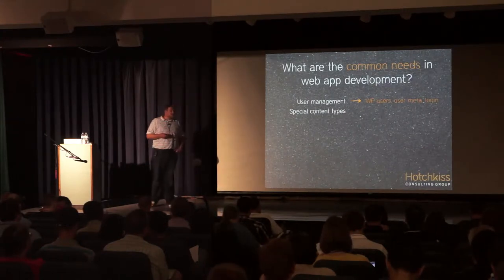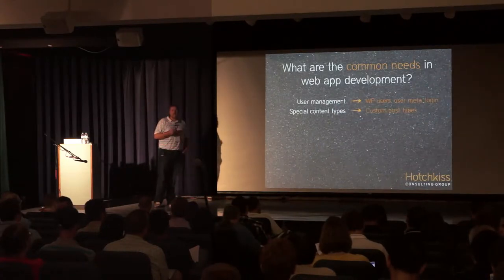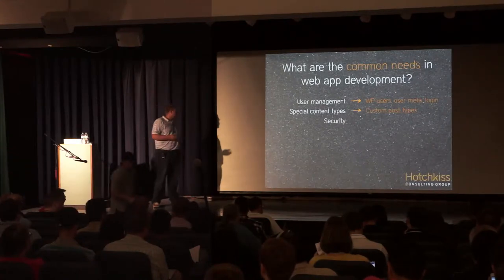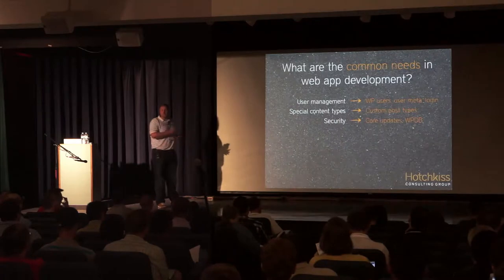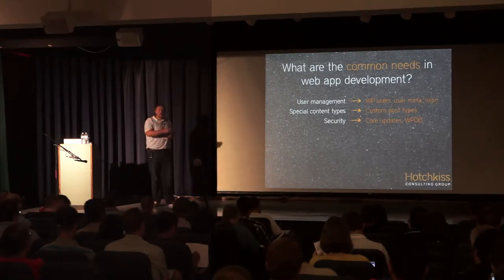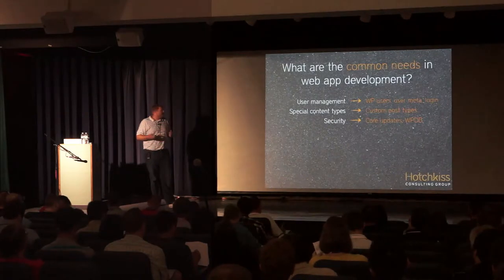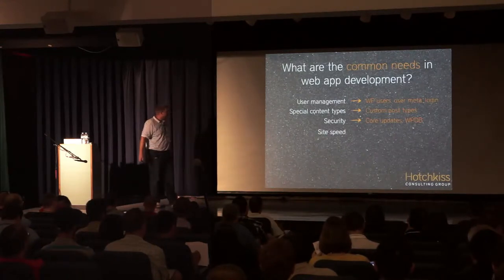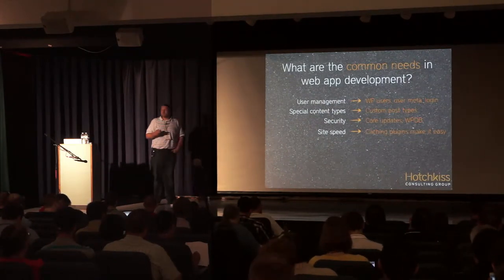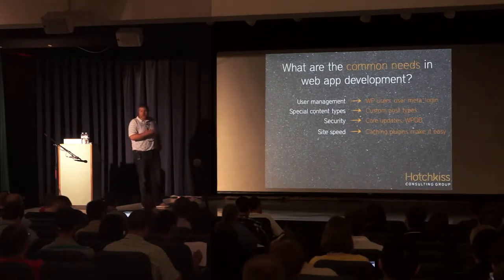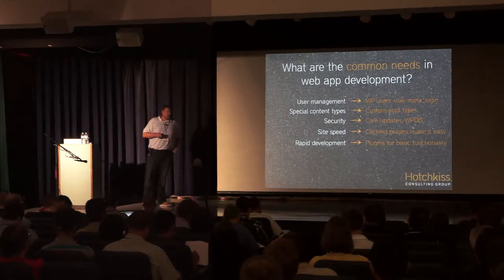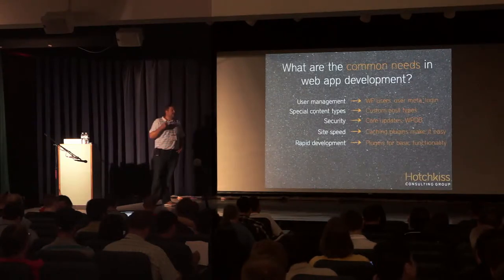You have special content types beyond just posts and pages, handled by custom post types, which you can use in interesting ways to relate content. You need security, and through core updates you protect yourself against vulnerabilities. Through the WPDB class, by preparing your queries, you'll find and eliminate most malicious code before it runs. Site speed — caching plugins make it easy, and there are lots of people talking about making WordPress sites faster. You can grab off-the-shelf plugins for basic functionality or use them as a starting point.